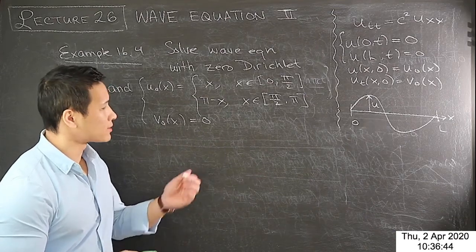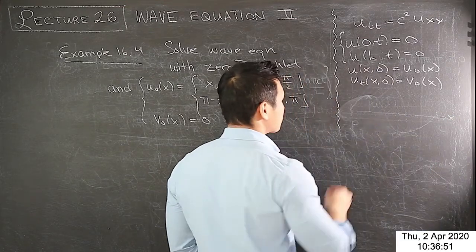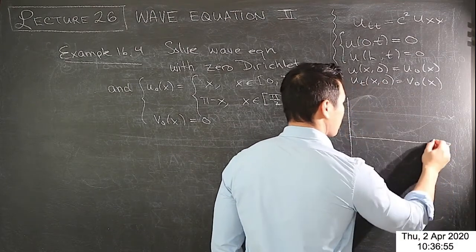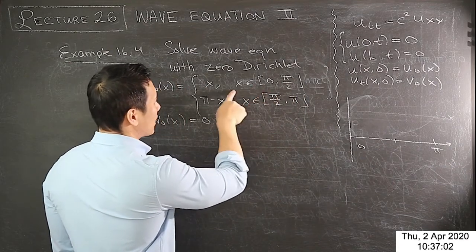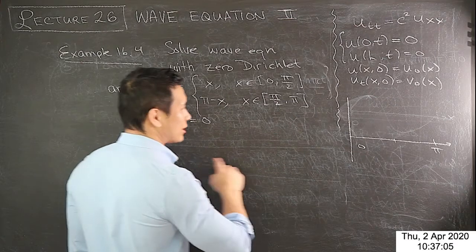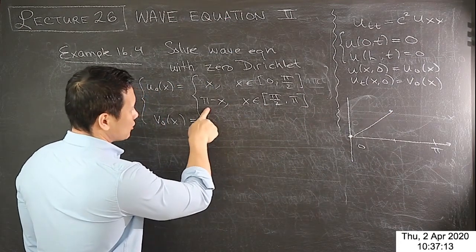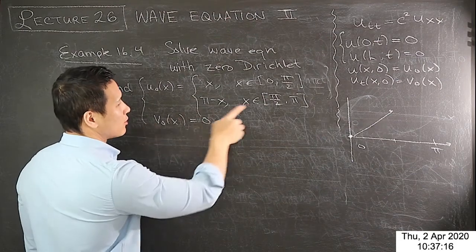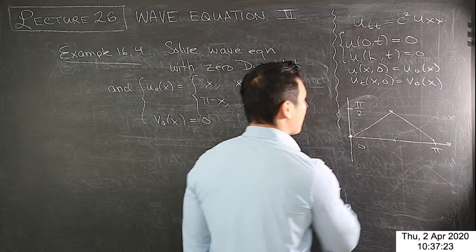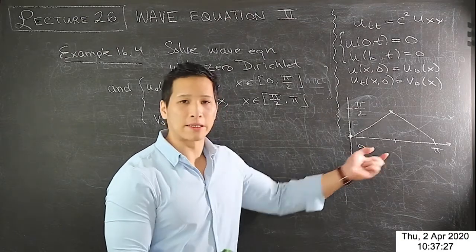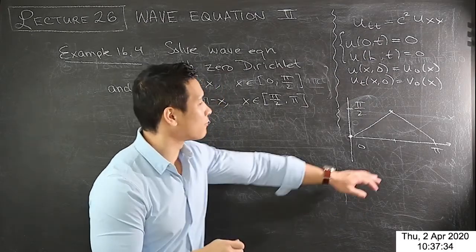This is the plucked string setup. The string goes from 0 to L = π. When x = π/2, the height is π/2. It's linear, going from 0 on the left up to π/2 at the midpoint, then back down to 0 at x = π. You pull the string up to this initial displacement and then let it go with initial velocity zero — you hold it stationary and release it.